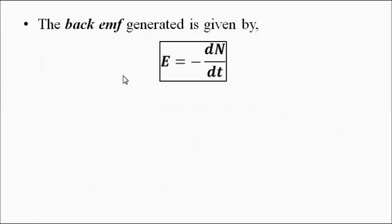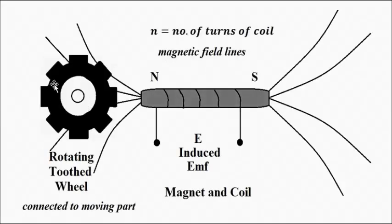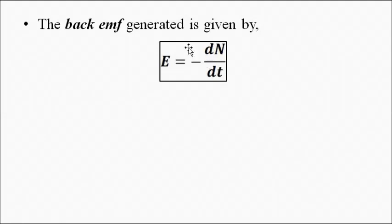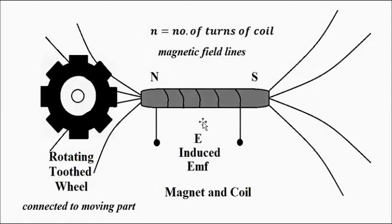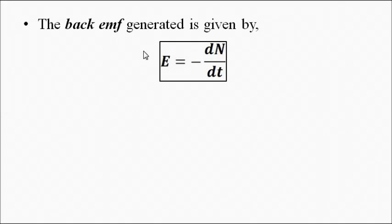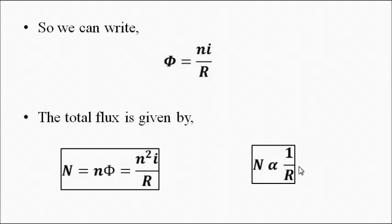The back EMF generated when the toothed wheel rotates in close vicinity of this magnet is given, as per Faraday's law, by e = -dNφ/dt. As the toothed wheel rotates in close vicinity of the magnetic field, the magnetic flux changes with respect to time and back EMF is generated: e = -dNφ/dt. The negative sign indicates it opposes the flux.